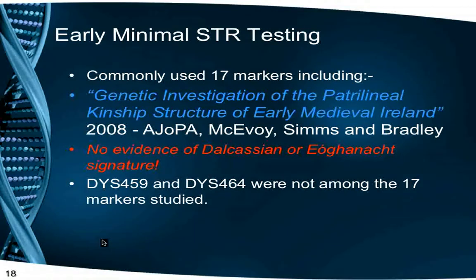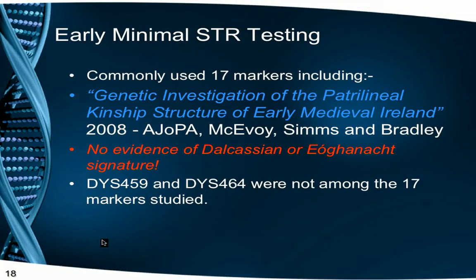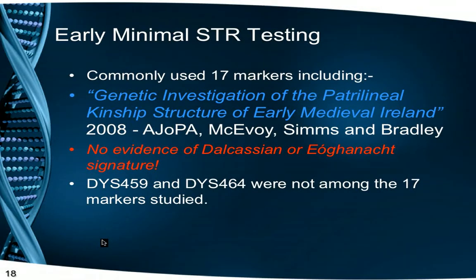Several papers were written in the early 2000s attempting to assign STR signatures to Irish clans. In 2008, Trinity College authors McAvoy, Simms and Bradley published a paper using just 17 STR markers — Genetic Investigation of the Patrilinear Kinship Structure of Early Medieval Ireland — published in the American Journal of Physical Anthropology. Since the Dalcassian STR signature was by now well known, it came as quite a surprise when this paper stated they could find no distinguishable signature for the Dalcassian. The reason was that the defining Dalcassian markers DYS 459 and DYS 464 were not among the 17 markers studied.